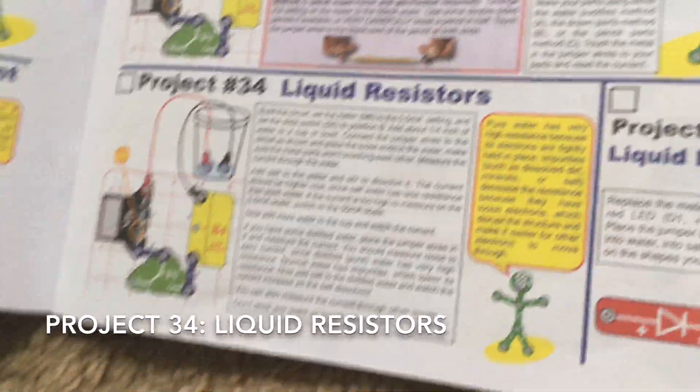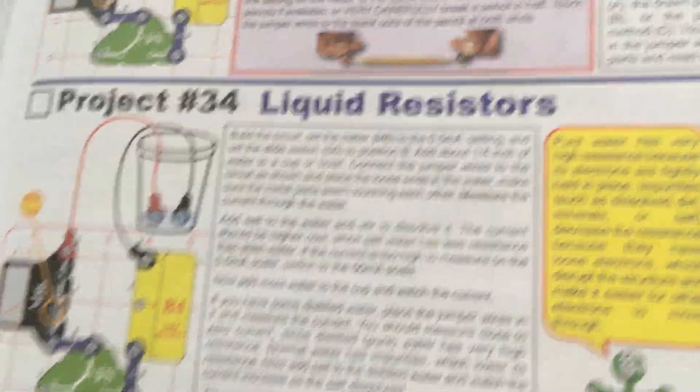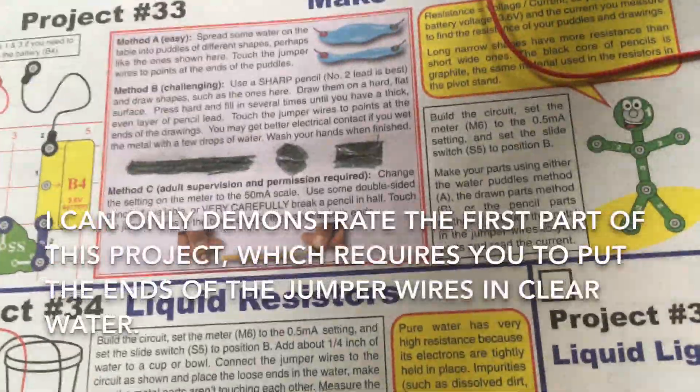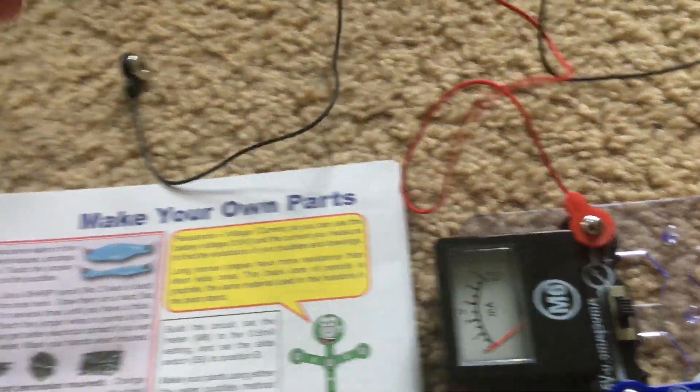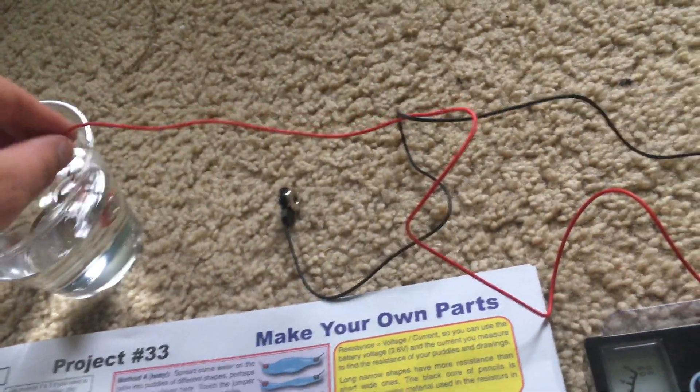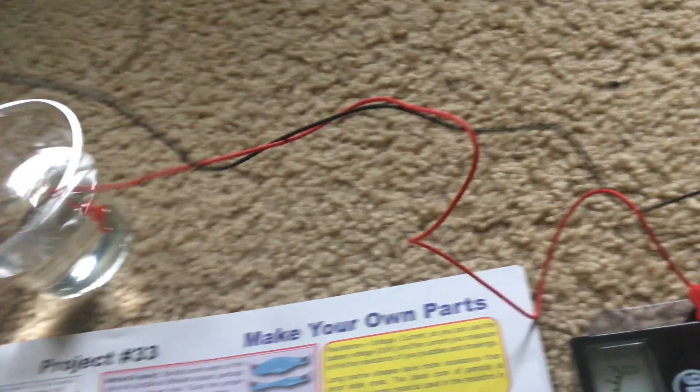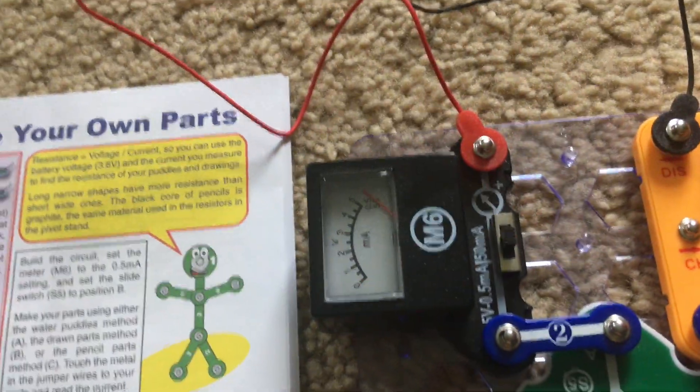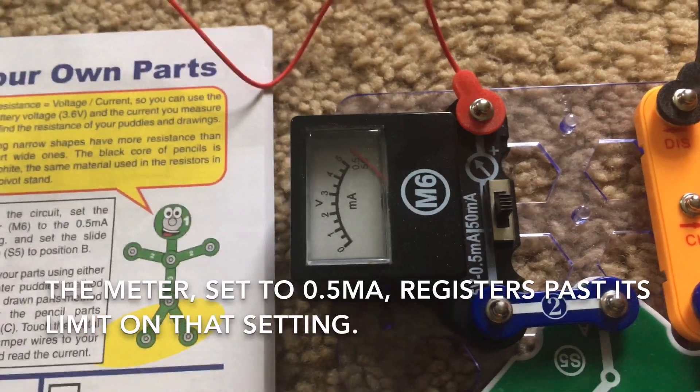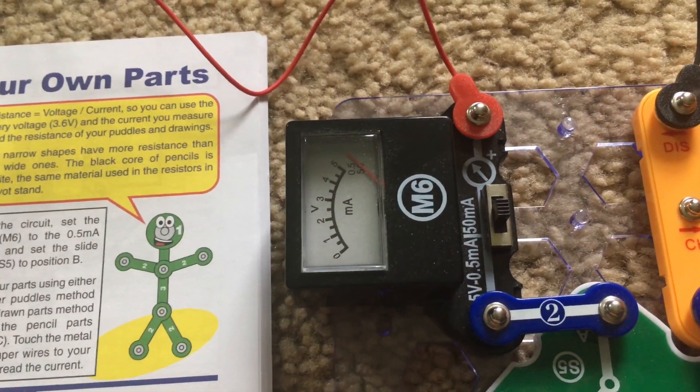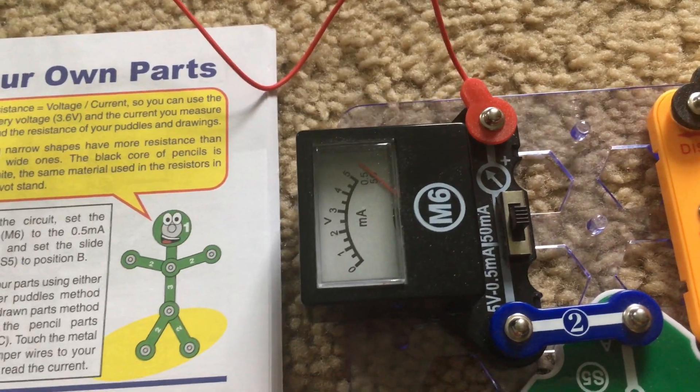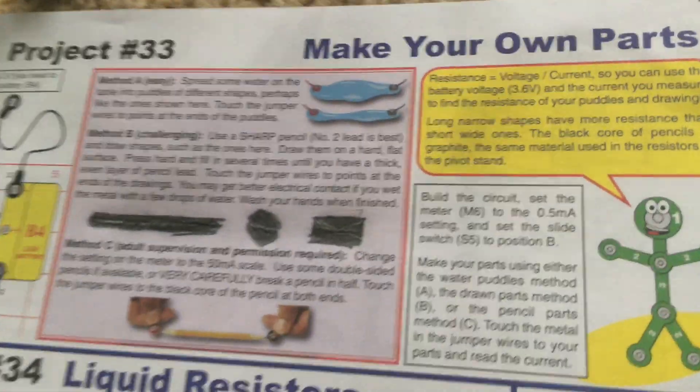I'm going to do a partial demonstration of project 34, which is called liquid resistors. I can only demonstrate the first part, which requires you to put the ends of the jumper wires into water, into a cup of water. The water is an excellent conductor of electricity and the meter registers all the way. It's on the same setting as in the previous project.